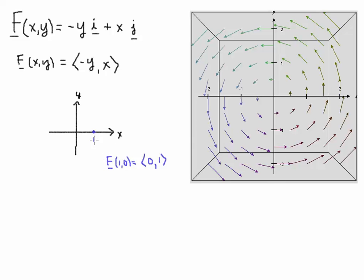If I plug the point x is 1 and y is 0 into this functional relationship—now remember y is 0, so the minus y gets a 0, and x is 1, so that is the vector <0,1>. So I'm just going to draw the vector <0,1>. And so that is the vector j, starting with its initial point at the point (1,0).